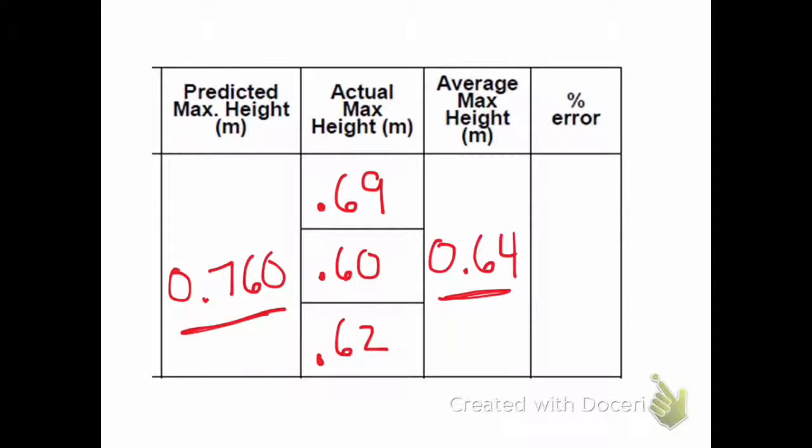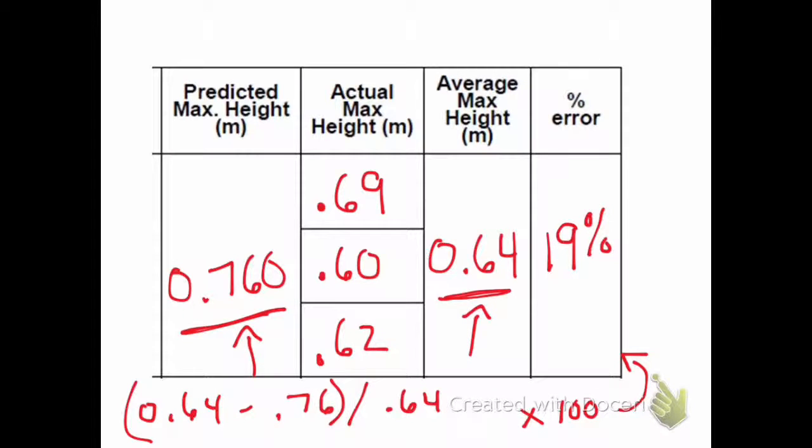Next we're going to calculate our percent error, comparing our actual height to our predicted height. Actual minus predicted divided by actual times 100 gives you our percent error. And this worked out to be about 19 percent error. So not a perfect prediction, but you're going to explore in your conclusions why that might be.